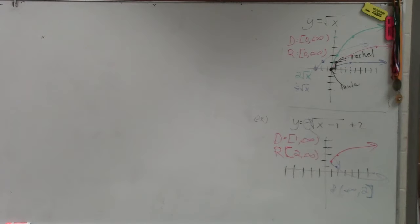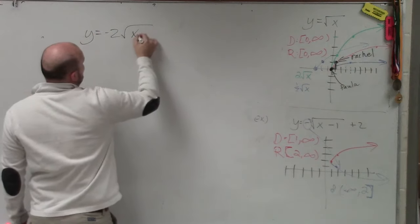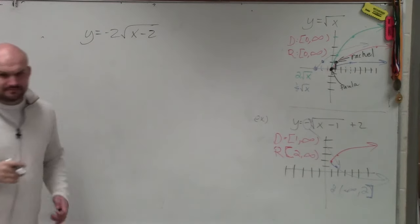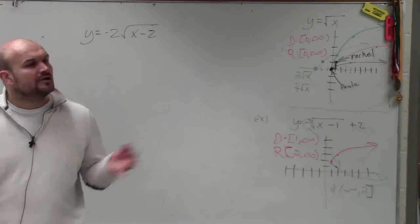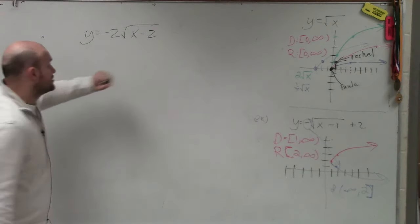So number five is y equals negative 2 square root of x minus 2, correct? OK, the first thing, ladies and gentlemen, when I'm looking at a problem like this is I want to go back to the transformation function.